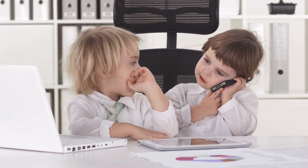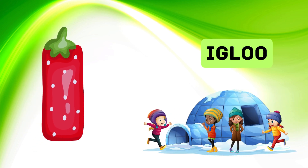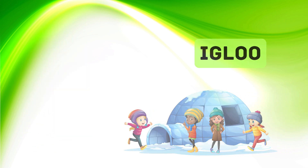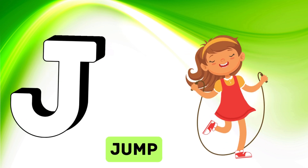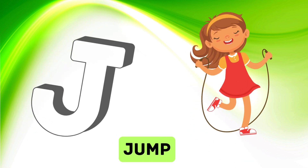I is for igloo, i-i-igloo. J is for jump, j-j-jump.